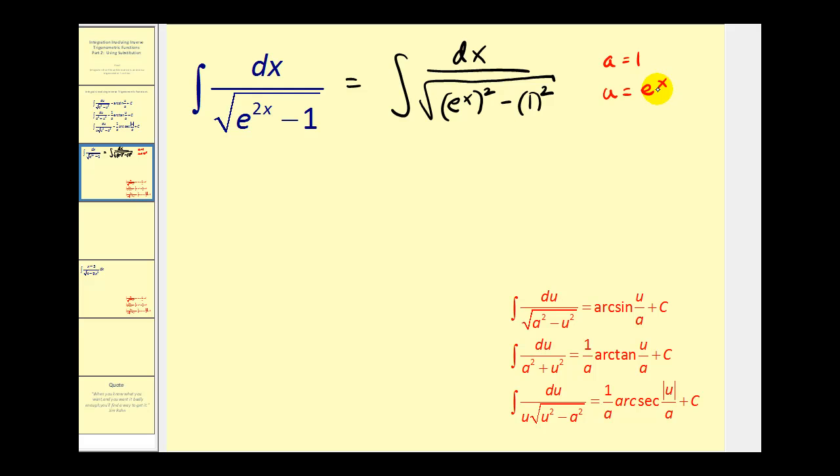Well, the next thing we would do is find differential u. Du will equal e to the x dx. But notice we don't have an e to the x dx as part of our integral, we just have dx. Let's go ahead and divide by e to the x. So this tells us that dx is equal to du divided by e to the x. But remember, e to the x is just equal to u. So that's going to come in handy in the next step.